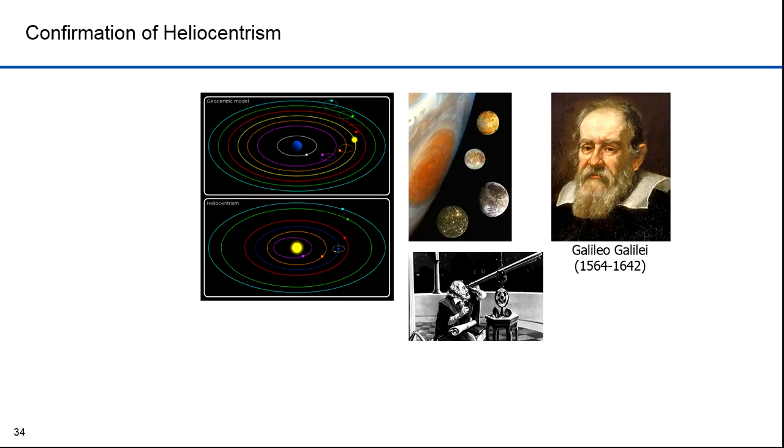On January 7, 1610, Galileo observed with his telescope what he described at the time as three fixed stars, totally invisible by their smallness, all close to Jupiter and lying on a straight line through it. Observations on subsequent nights showed that the positions of these stars relative to Jupiter were changing in a way that would have been inexplicable if they had been really fixed stars. On January 10, Galileo noticed that one of them had disappeared, an observation which he attributed to its being hidden behind Jupiter. Within a few days, he concluded that they were orbiting Jupiter. He had discovered three of Jupiter's four largest satellites, or moons. He discovered the fourth on the 13th of January. These satellites are now called Io, Europa, Ganymede, and Callisto, later renamed to the Galilean satellites in his honor.